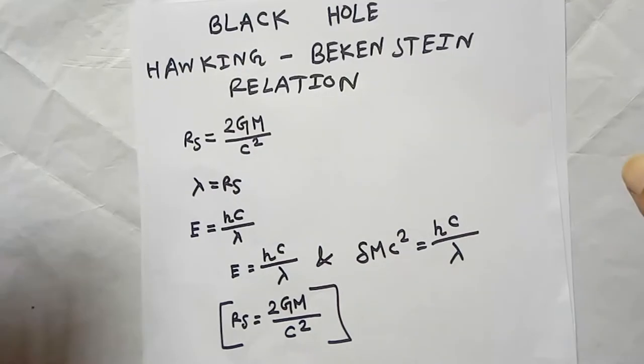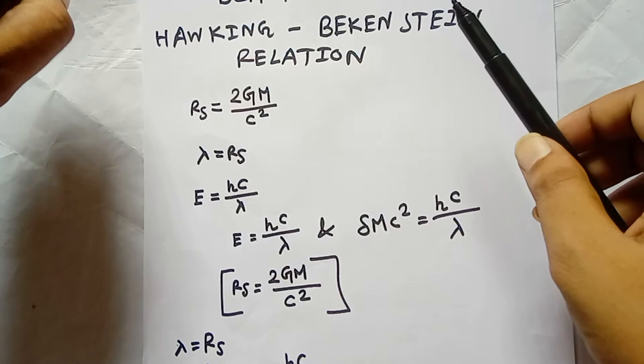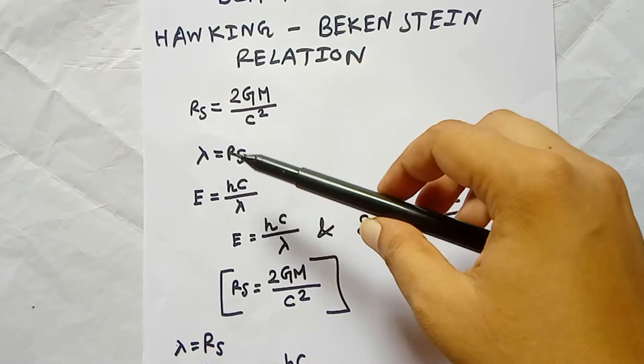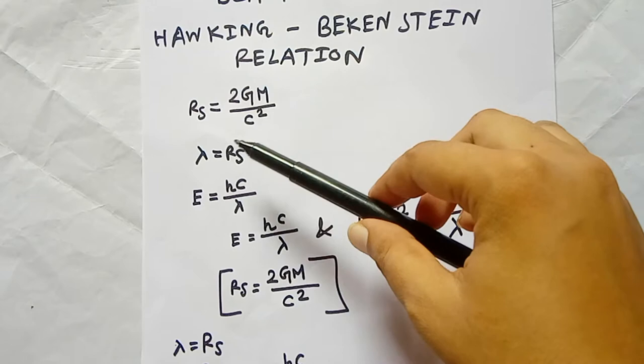Hello dear wizards, here we are talking about the black hole Hawking-Bekenstein relation. Before we start the relation, we should know about a few things. The Schwarzschild radius is R equals 2GM divided by c squared, where G is the universal gravitational constant, M is the mass, and c is the speed of light.